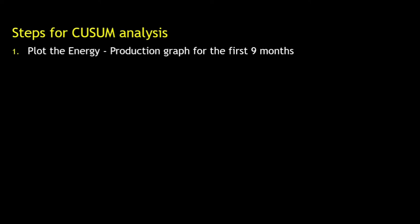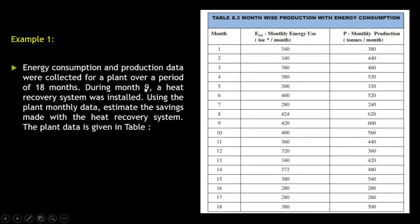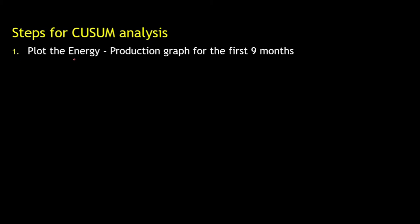Let us first check out the steps for QSUM analysis. The first step would be to plot the energy-production graph for the first 9 months. Why 9 months? Because in the question it was mentioned that the heat recovery system was installed during the 9th month, so calculation will be up to the 9th month.